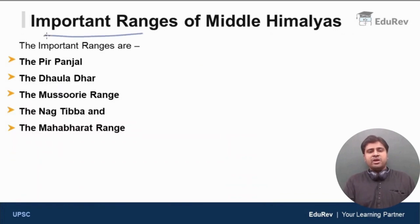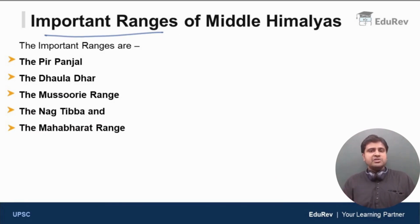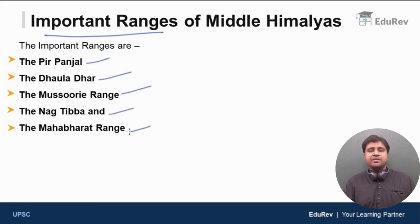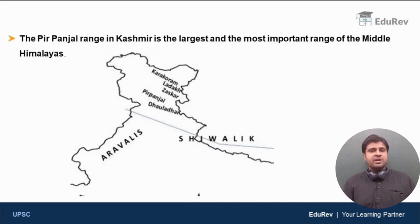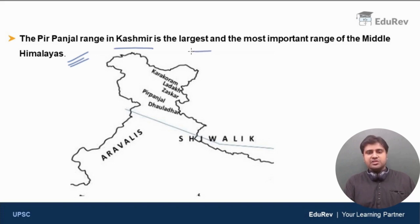This concept is very important and has been asked many times in exams previously. The important ranges of the middle Himalayas — we will discuss each and every range. Let us first start with the Pir Panjal range. The Pir Panjal range in Kashmir is the largest and the most important range of the middle Himalayas.